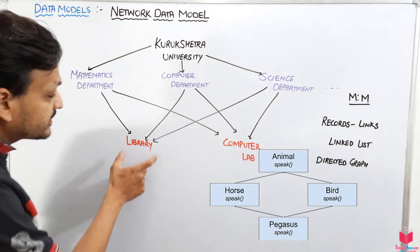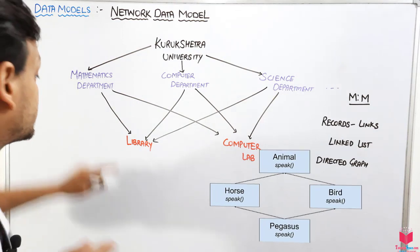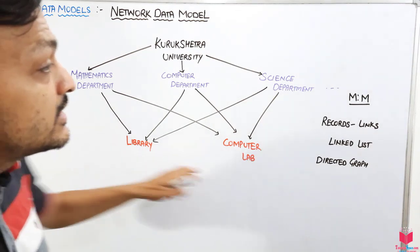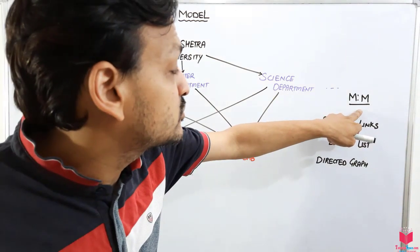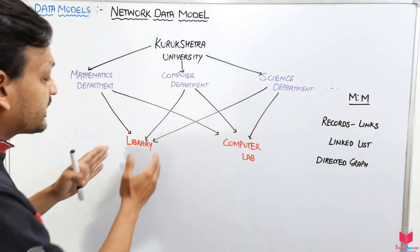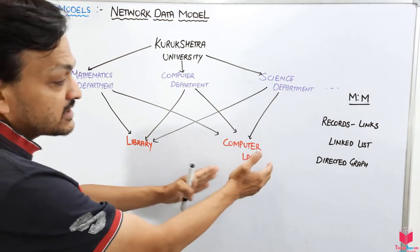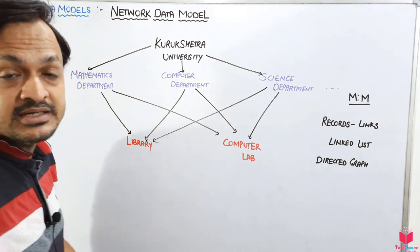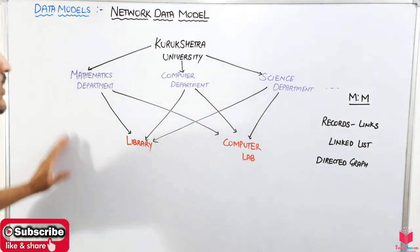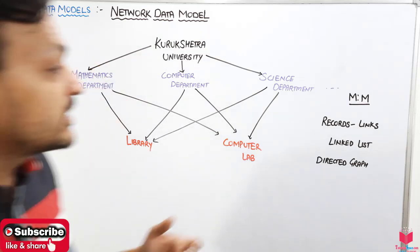The computer lab can also be accessed by the Mathematics, Computer, and Science departments. At this point we have not only one link but many links. That is why this represents the many-to-many relationship — many departments can access the library and many departments can access the computer lab.